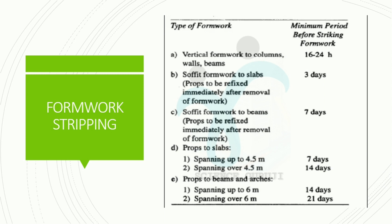Formwork stripping minimum periods: vertical formwork to columns and walls — 16 to 24 hours. Soffit formwork to slabs with props refixed immediately after removal — 3 days. Soffit formwork to beams with props refixed immediately — 7 days. Props to slabs spanning up to 4.5 m — 7 days; spanning over 4.5 m — 14 days. Props to beams and arches spanning up to 6.0 m — 14 days; spanning over 6.0 m — 21 days.